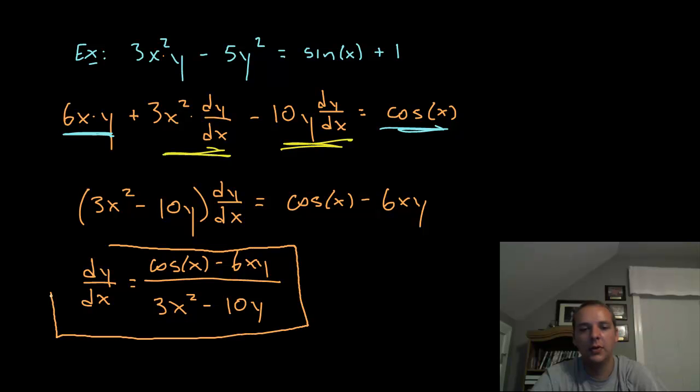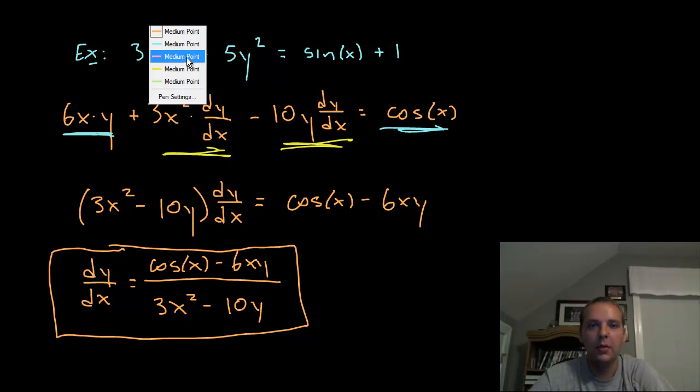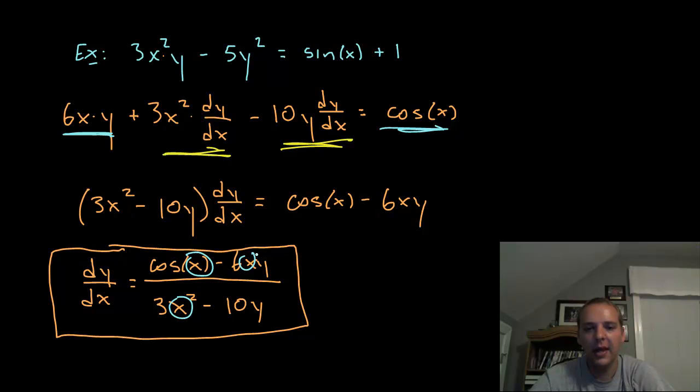So that's how we find a derivative for an equation that's defined implicitly. Now one last thing that you'll notice about this derivative is you traditionally only needed the x to plug in the derivative to find the slope. But now notice we need both the x's and the y's.